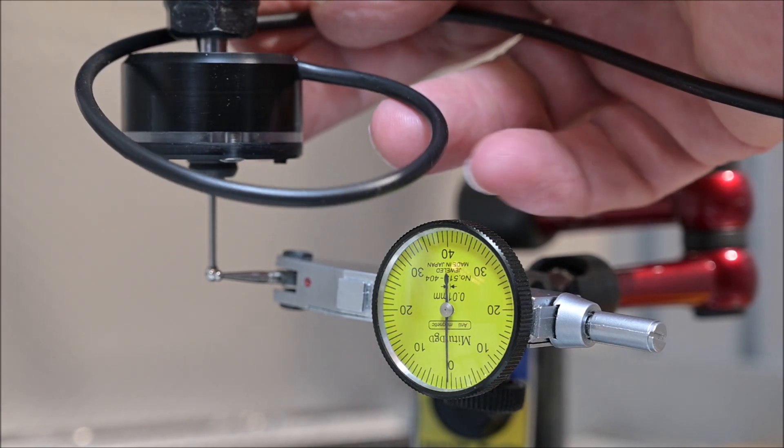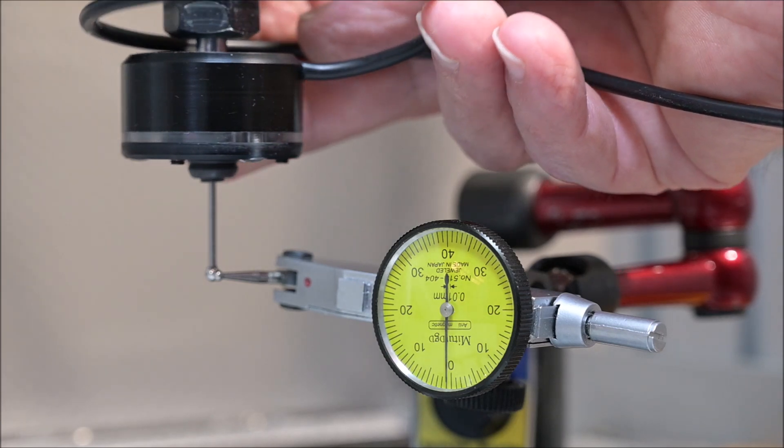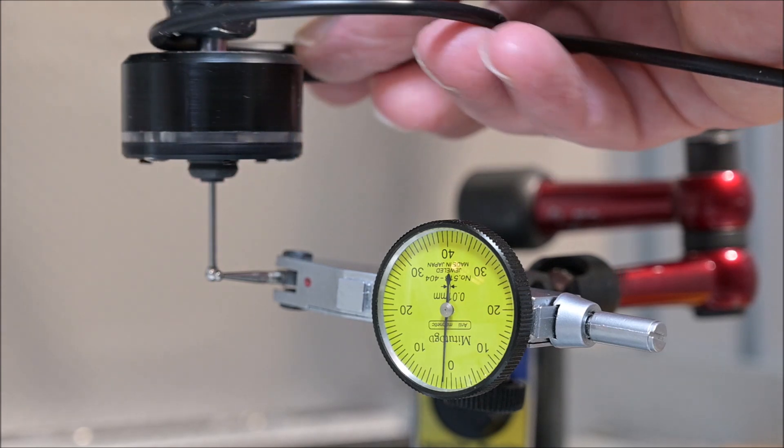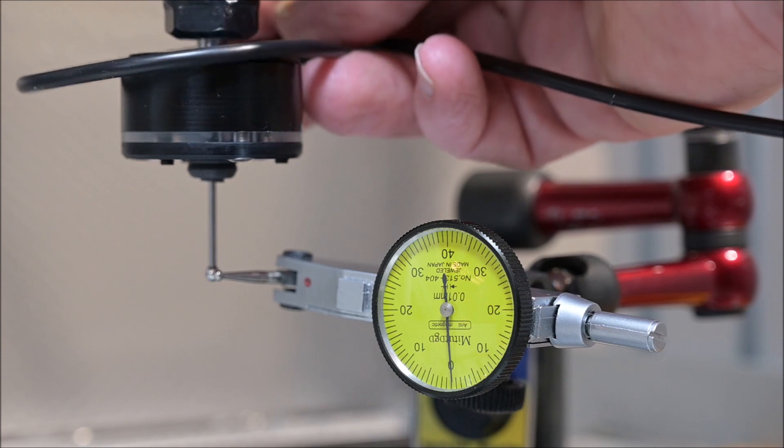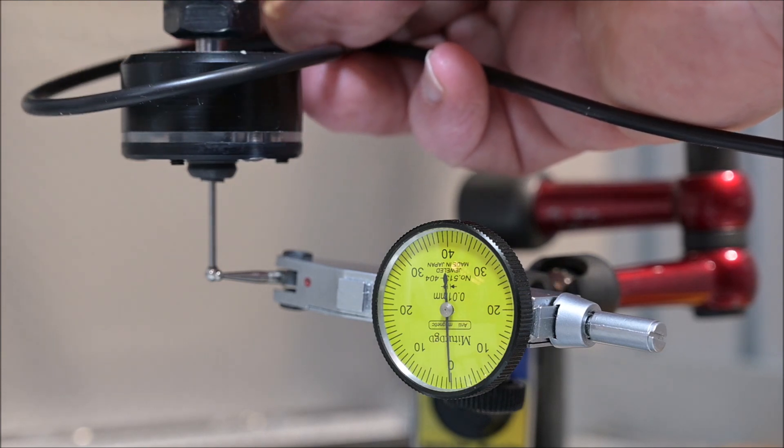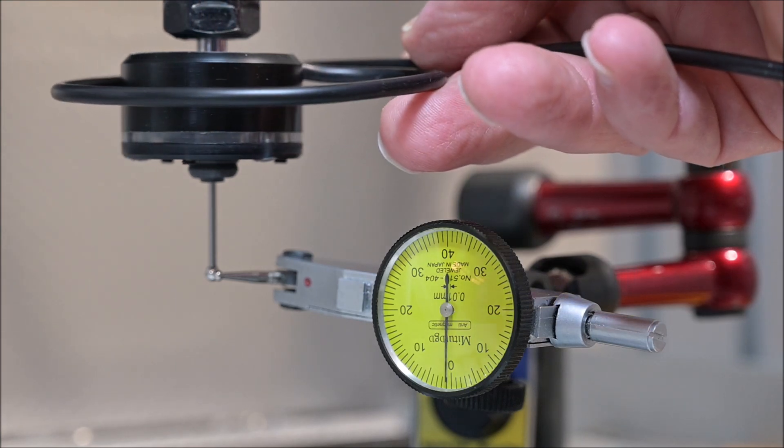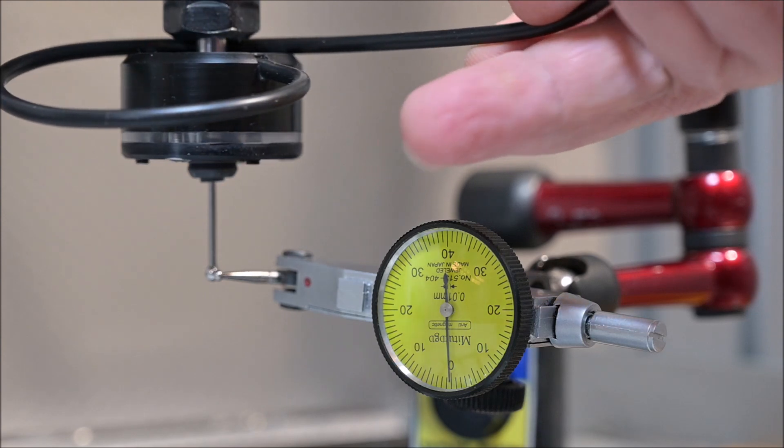One disadvantage of my 3D probe is that the wires are fixed to the probe, so it's a bit difficult to turn it around for tuning and measuring. But this company is also selling probes with magnetic connectors.